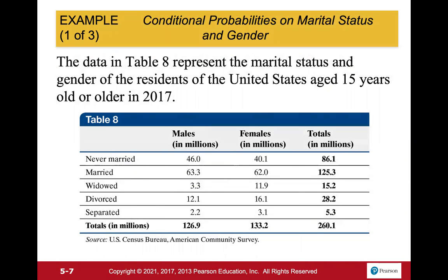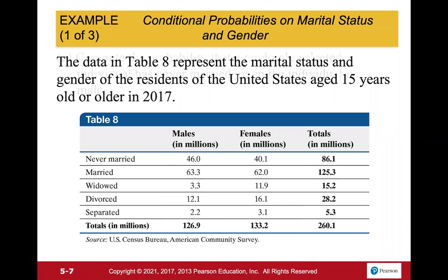Now let's look at a data table. The data in Table 8 represents the marital status and gender of residents of the United States aged 15 and older. This looks familiar — we had it in the first or second section of chapter five. We have males and females with totals for each category: never married, married, widowed, divorced, or separated. When we add all the totals, we get 260.1 million in both directions, because we're adding the same data.